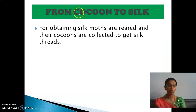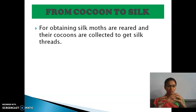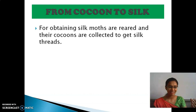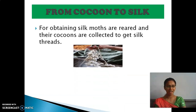What is our next topic? From cocoon to silk. We know that we get silk from cocoon, but how do we get that silk from cocoon? For obtaining silk, silk moths are reared and their cocoons are collected to get silk threads. What is meant by rearing? Rearing is nothing but the process of taking care of animals by providing them with food, shelter, and taking care of them. Silk moths are reared for getting cocoon, and cocoons are collected to get silk threads.